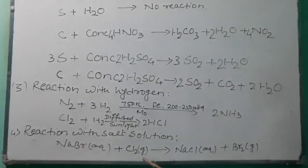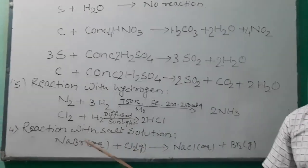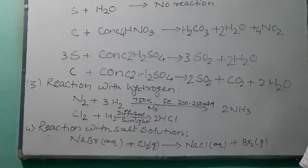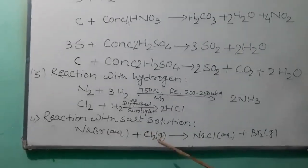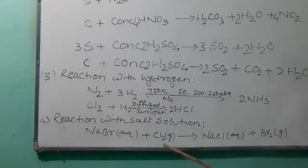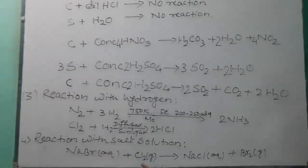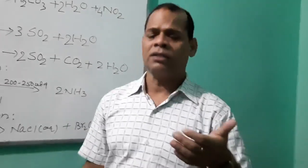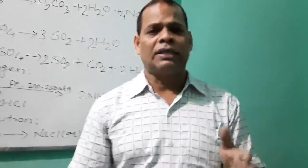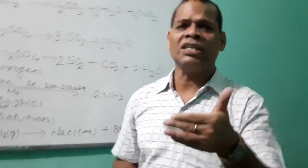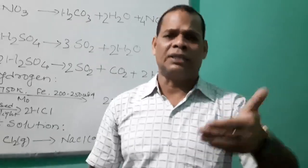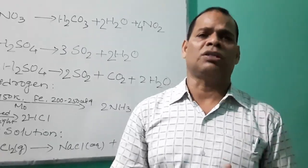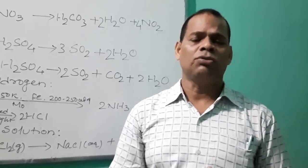If you reverse this reaction — taking an aqueous solution of sodium chloride and passing bromine gas through it — no reaction takes place. With this we can conclude that bromine is less reactive than chlorine. Thank you, have a nice day.